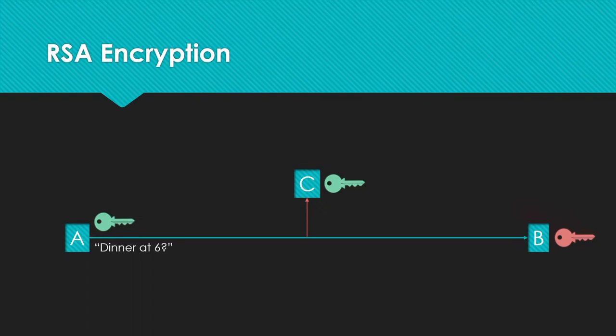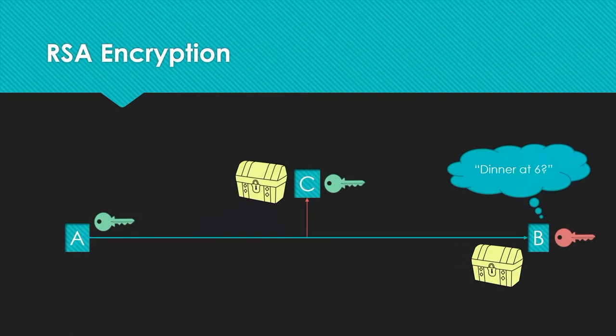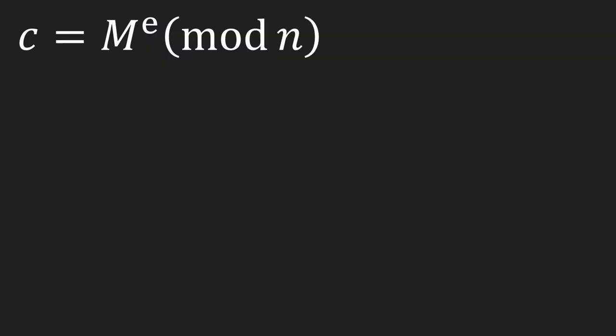For example, if person A wanted to send a message to person B, person A would use his public key to encrypt the secret message and then send it to person B, who would decrypt it using his private key. Only person B would be able to see the secret message and not person C because he does not have access to the private key.